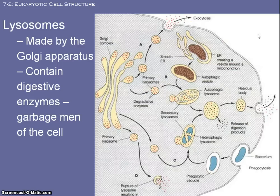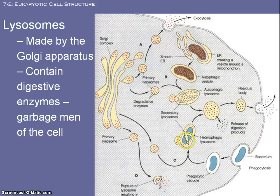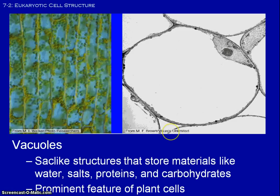Lysosomes — the Golgi body is responsible for making lysosomes. We call them the garbage men of the cell: they break down old organelles or cell parts that are no longer functioning. Vacuoles are pretty easy to identify. You'll find a lot of them in plant cells, but they're also found in animal cells. They tend to be used for storage of lots of different stuff like water, salts, proteins, or carbohydrates — really just compartments to store materials. A lysosome is actually a specialized type of vacuole because it has digestive enzymes in it.